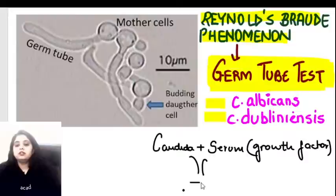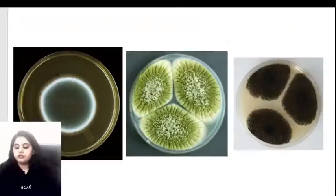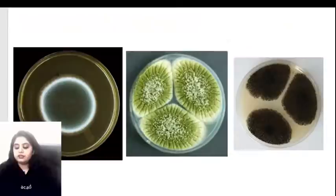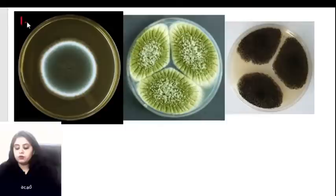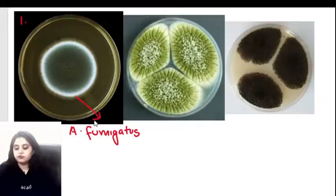The germ tube is positive in both Candida albicans and Candida dubliniensis only - this is known as the Reynolds Braude phenomenon or germ tube test. Next, three pictures of Aspergillus: the first is Aspergillus fumigatus. Fumes remind us of smoke, so fumigatus has a smoky green color.